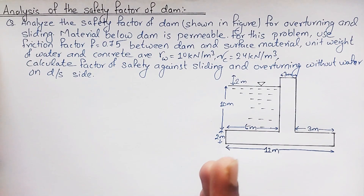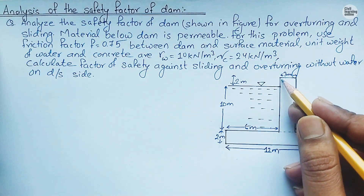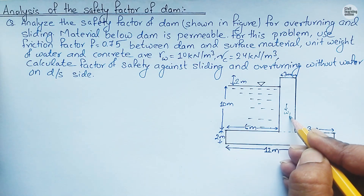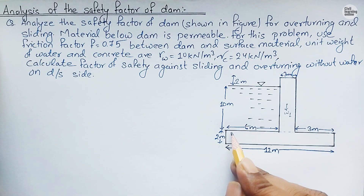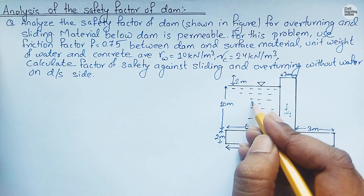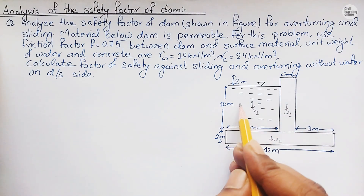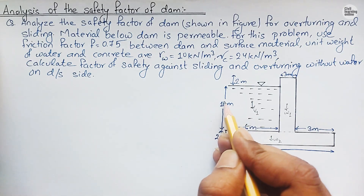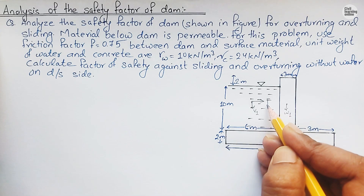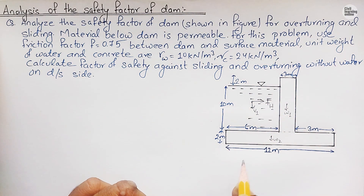To begin the solution, we split the whole structure into different portions. The upper portion is taken as weight W1 and the lower portion as W2. The water above the upstream base also exerts a vertical force, represented as V1. The water held back on the upstream side exerts a horizontal pressure, represented as F_h.